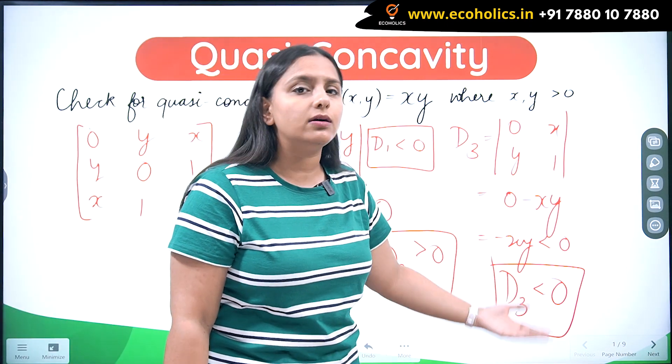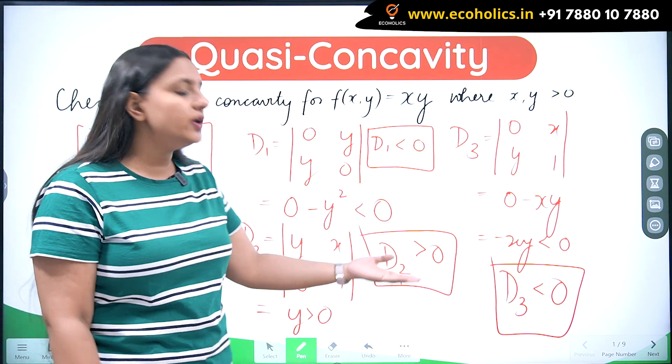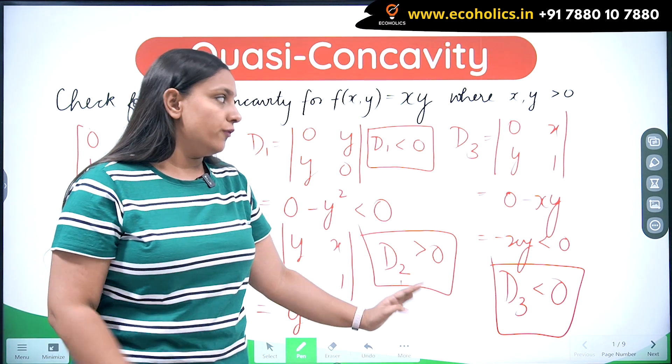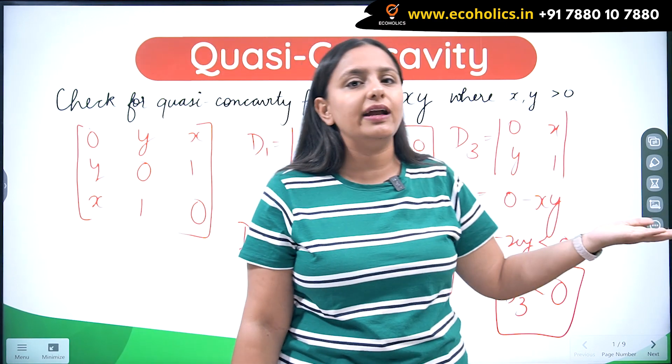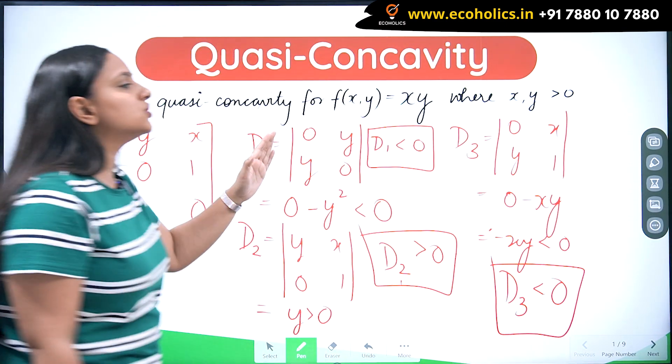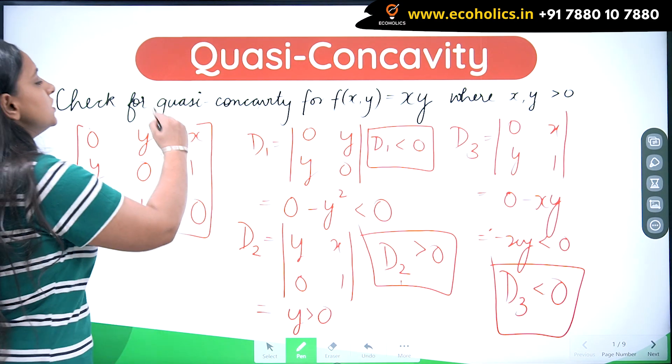So it means D1, D3, which are my odd determinants, they are negative, strictly negative, whereas my even determinant is positive. Hence, even determinants positive and odd determinants negative make this function a quasi-concave function. So yes, this function is going to be a quasi-concave function.